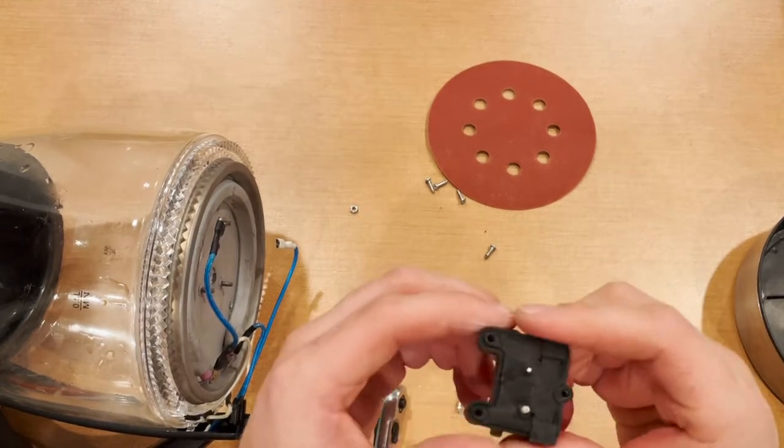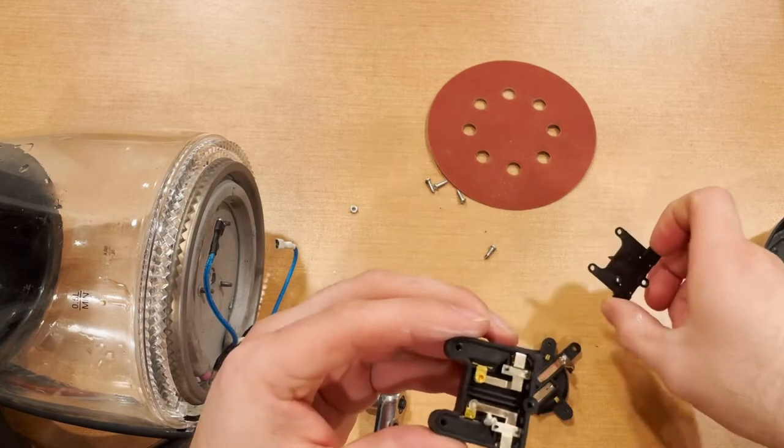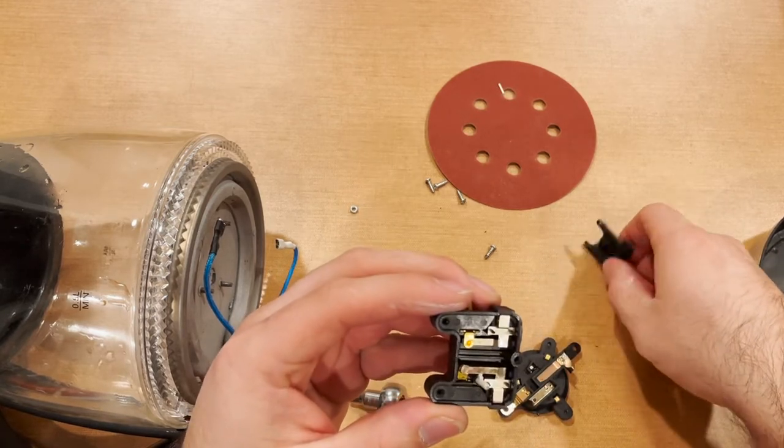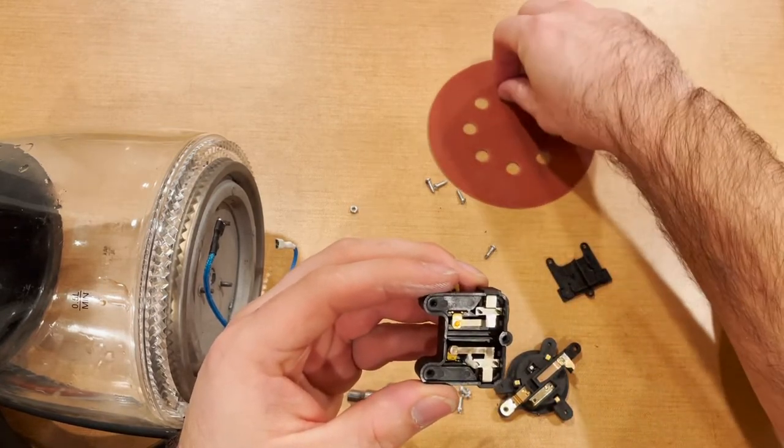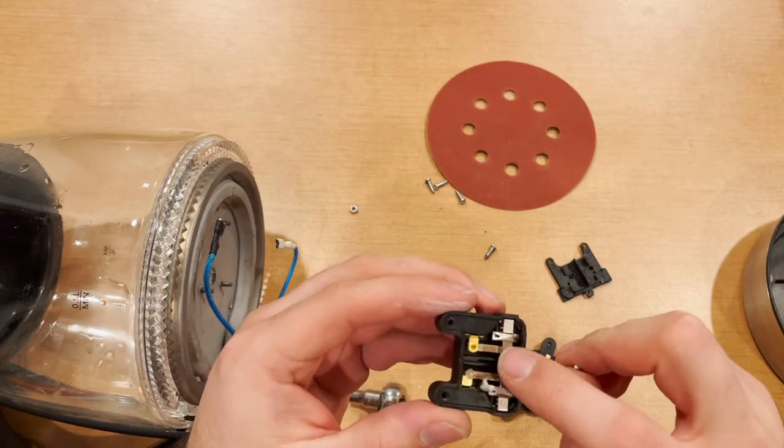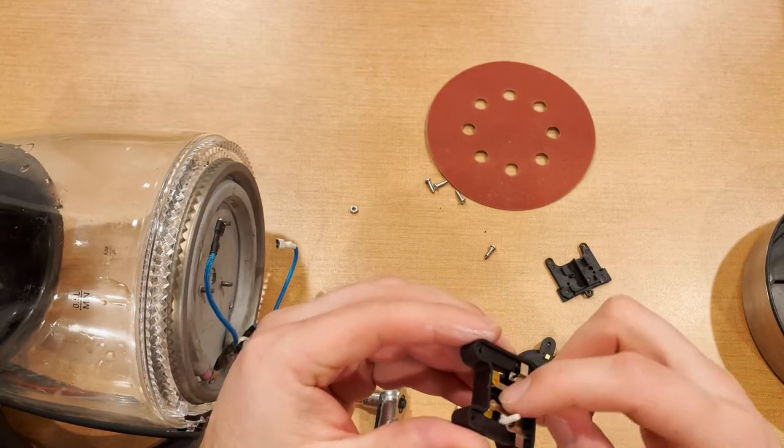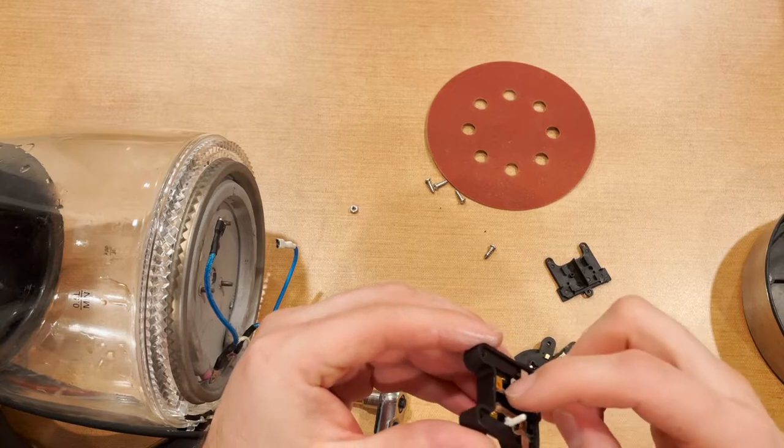So our next step is going to be to take this top plate off here, slides off fairly easily, and we will be looking to make sure you don't lose anything. And we're going to be looking to clean between these conductors. You guys can see these come down and touch, we're going to want to go ahead and clean them.